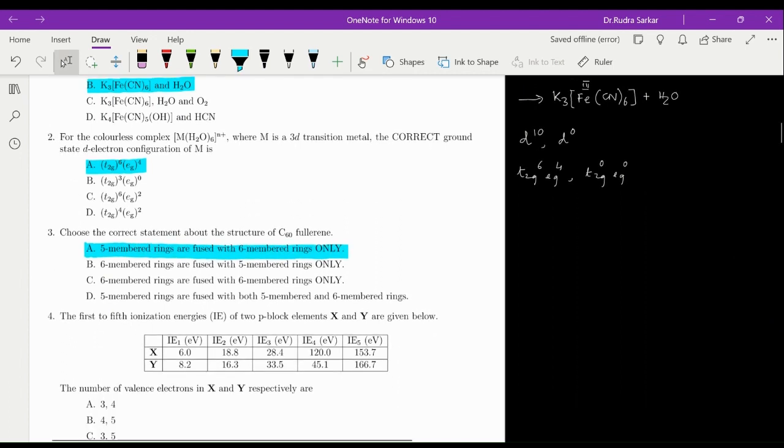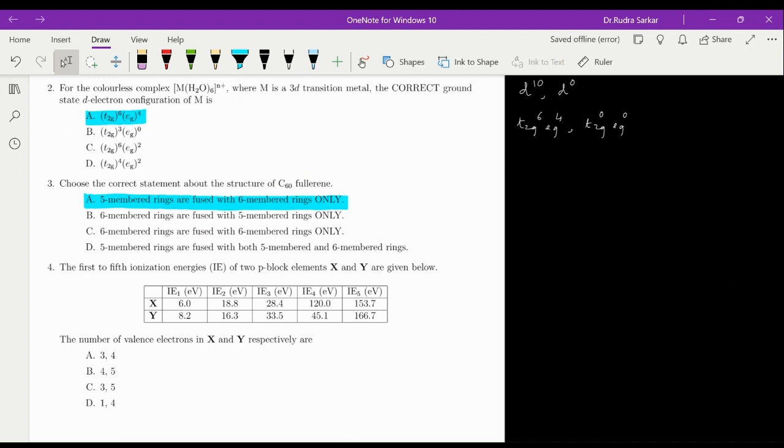For this, the first to fifth ionization energies of two p-block elements X and Y are given to us. Whenever we see a jump in the ionization energy, that means we are trying to take an electron from a stable system. That means the one that is having octet electronic configuration. So all the values before that correspond to the values for the valence shell electrons. The jump for X is for the fourth electron, so that means its valence should be 3. The jump for Y is for the fifth electron. That means its valence should be 4. So our answer is going to be 3 and 4.